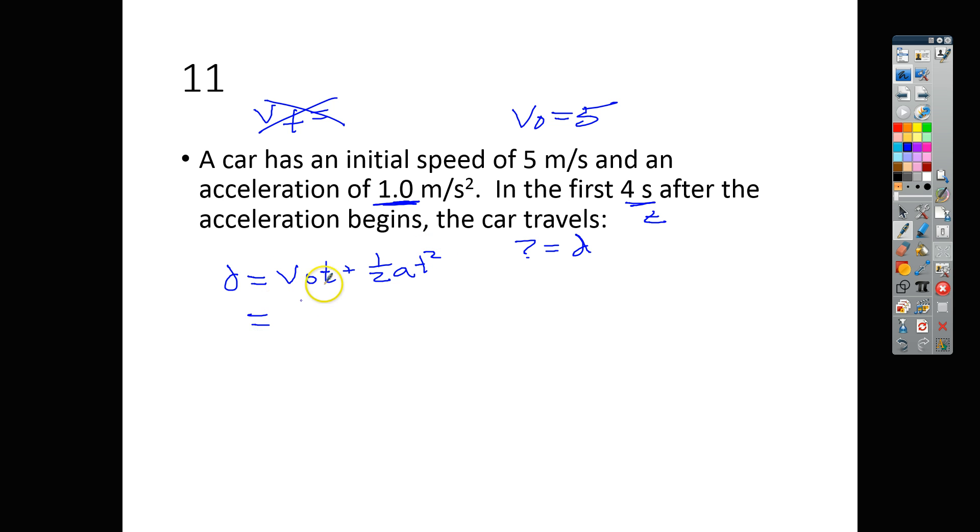The distance is then equal to our original speed, which we said was 5, times our time, which is 4 seconds, plus 0.5, that's a half, times our acceleration, which is positive 1, times 4 squared. Now we have 20 here, plus 1 half of 16, which would be 8.